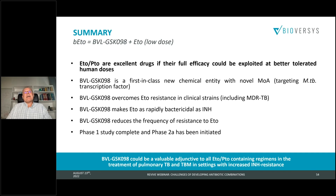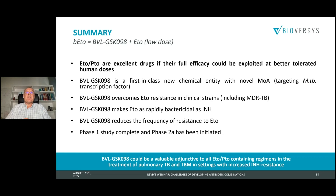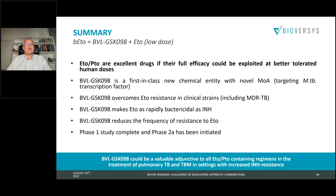BVL-GSK098 is the first-in-class new chemical entity with a novel mode of action targeting a transcriptional factor. It overcomes ethionamide resistance, makes ethionamide as rapidly bactericidal as isoniazid, overcomes isoniazid resistance, and reduces the frequency of resistance. The phase 1 study has been completed and the phase 2A study has been initiated, submitted to South African authorities and run by TASK and Andries Diacon's group in South Africa.